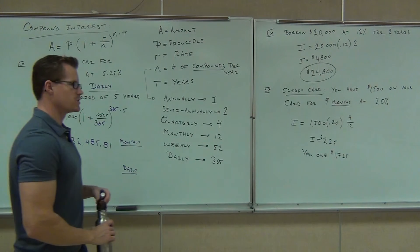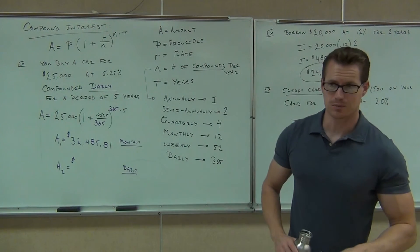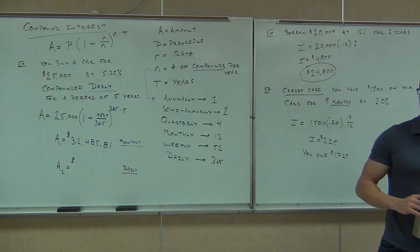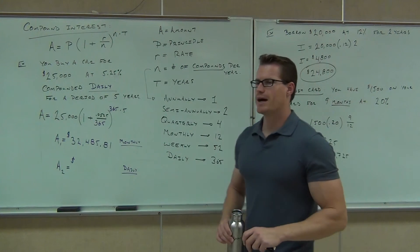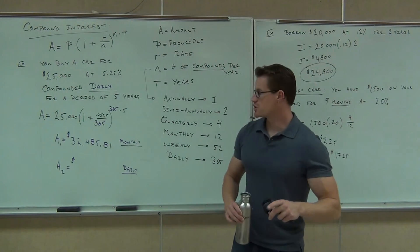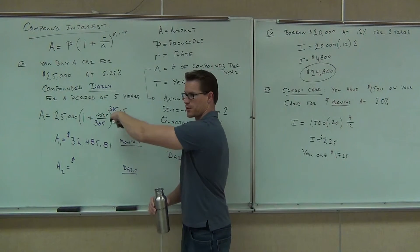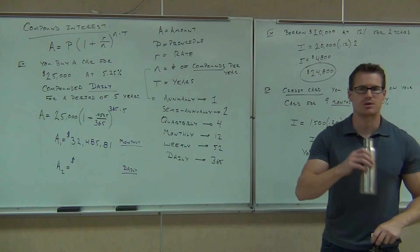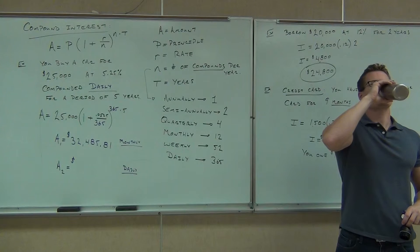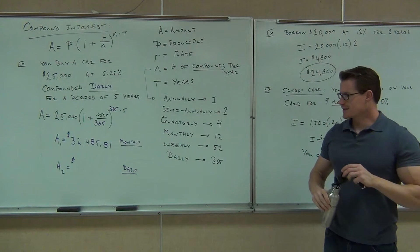So, again, what you would do is do 365 times 5. That's the number you write down. Then you do the 0.0525 divided by 365 in this case. Press enter. Add one. Press enter. Then take it to the whatever this power is. You've already written that down. Press enter. Then multiply by 25,000. You'll have your answer. It should be $32,000 something.